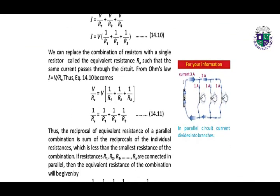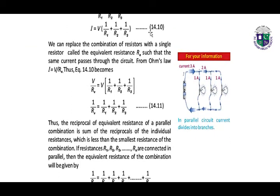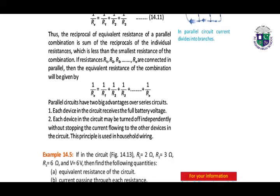We can take V as common. We can replace the combination of resistors with a single resistor RE, giving us 1 over RE equals 1 over R1 plus 1 over R2 plus 1 over R3, as in equation 14.10. Thus, the reciprocal of equivalent resistance of a parallel combination is the sum of the reciprocals of the individual resistances, which is less than the smallest resistance of the combination. If resistances R1, R2, R3 through Rn are connected in parallel, the equivalent resistance of the combination will be given accordingly.